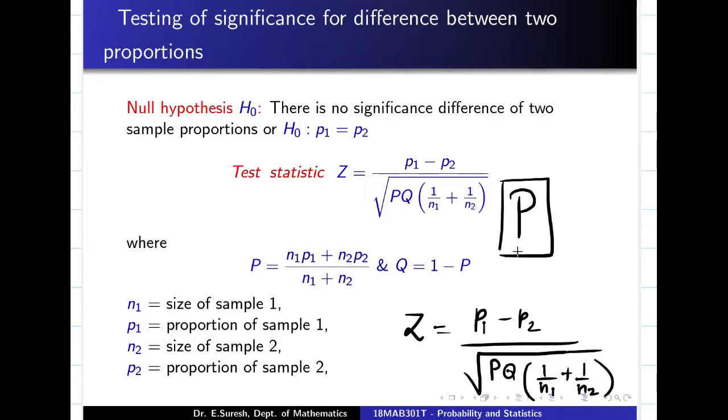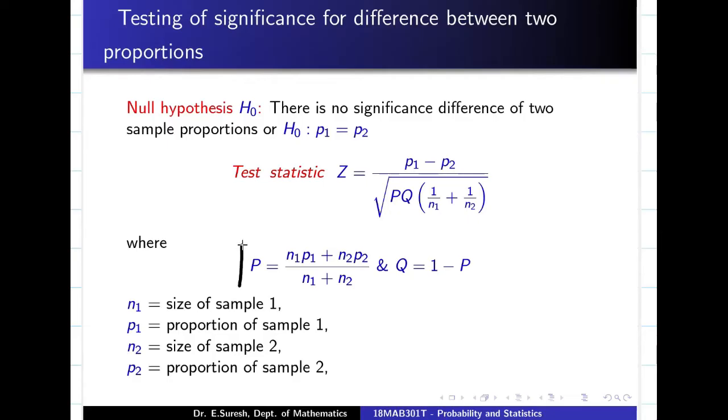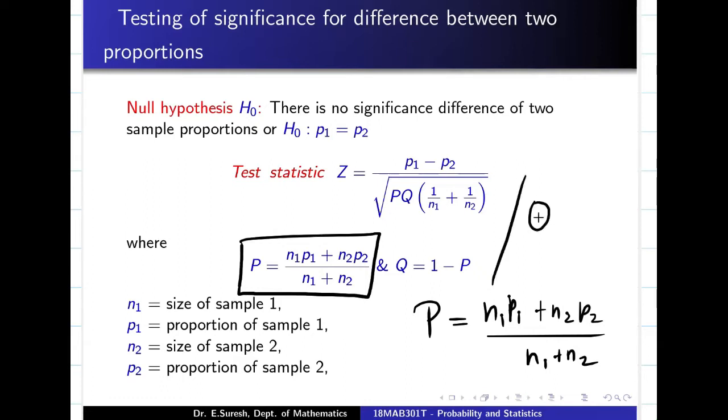Sometimes in the problem, P may be given, sometimes it is not given. If P is not given, you have to use this formula. This is very easy, since anyway P1, P2, N1, N2 will be given. So my capital P, I can find like N1P1 plus N2P2 divided by N1 plus N2. As usual, Q you can find by 1 minus P. Let us go into the session.